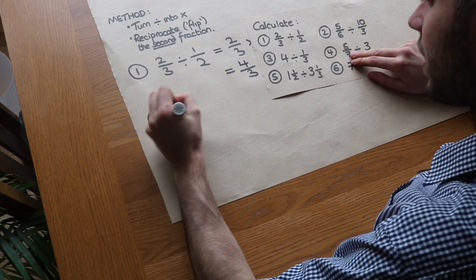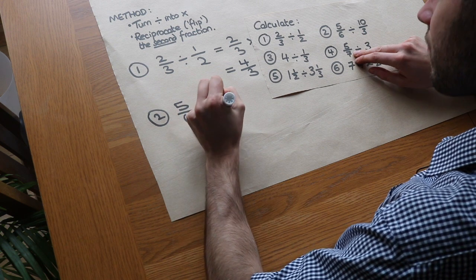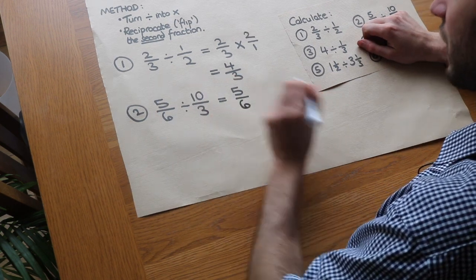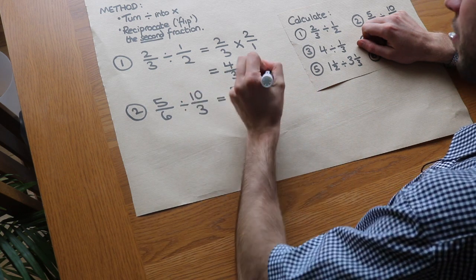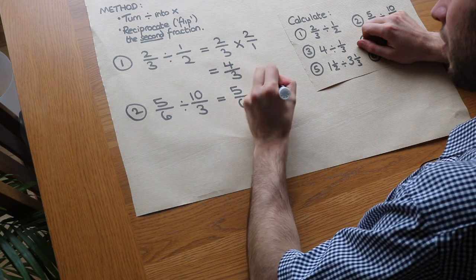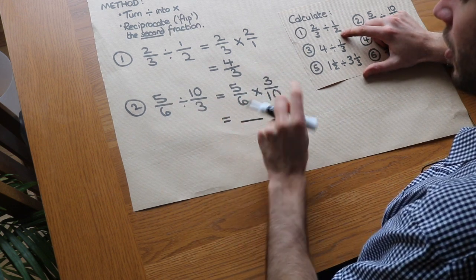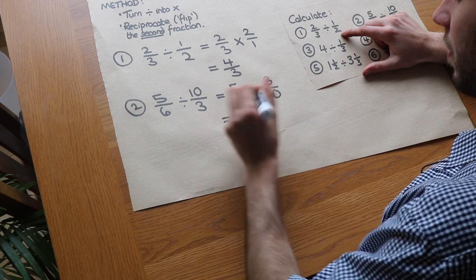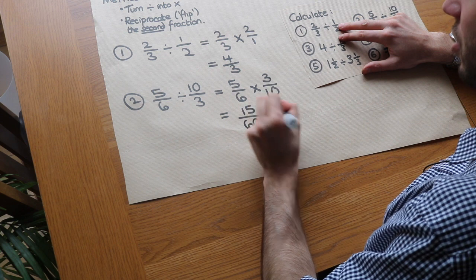We have 5/6 divided by 10/3. We keep the first fraction as it was, turn the divide into a times, and flip/reciprocate the second fraction. So we've now got 3/10. We multiply the numerators: 5 times 3 equals 15, and 6 times 10 equals 60.